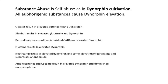Substance abuse is actually self-abuse, as in dynorphin cultivation. Opiates result in increased adrenaline and dynorphin. Alcohol results in elevated glutamate and dynorphin. Benzodiazepines result in diminished GABA and elevated dynorphin. Nicotine: elevated dynorphin. Marijuana results in elevated dynorphin, some elevation of adrenaline, and suppresses anandamide, which we'll talk about later. Amphetamine and cocaine result in elevated dynorphin. So these are the basic mechanisms of addiction.